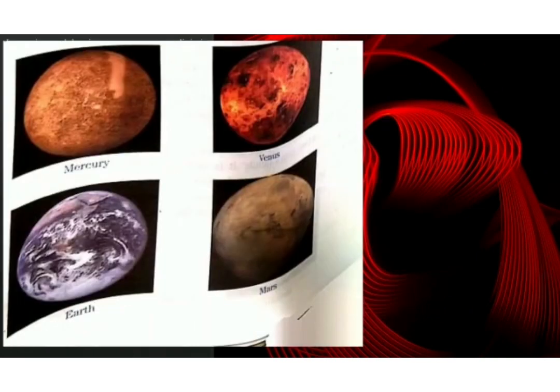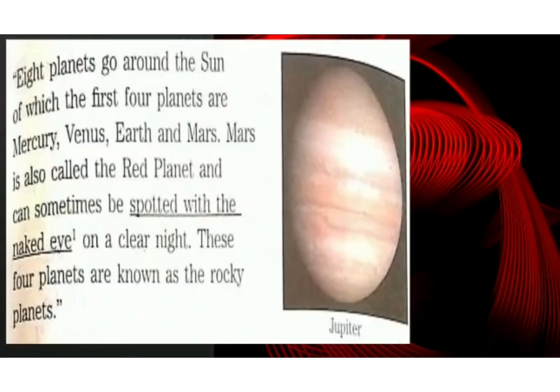'Eight planets go around the Sun, of which the first four planets are Mercury, Venus, Earth and Mars. Mars is also called the Red Planet and can sometimes be spotted with the naked eye on a clear night. These four planets are known as the Rocky Planets.'